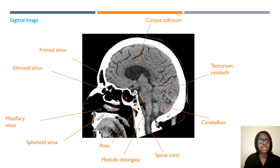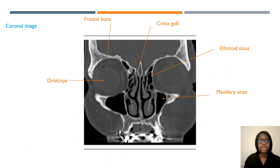Make sure that you know this is a sagittal image of the head. You also have a coronal image of your sinuses, so just make sure that you know this information.